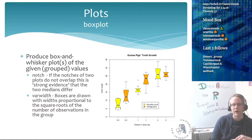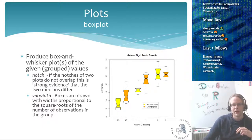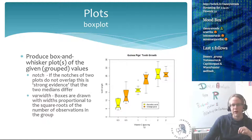There are some types of specialty plots — for example, the box plot. Here we have the guinea pig tooth growth data, showing different dosages of vitamin C on one axis and the length of the guinea pig tooth on the other.